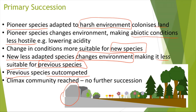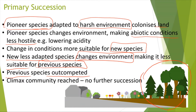This carries on until the final community is reached, which is the climax community, and there would be no further succession. To summarise: first, the pioneer species, which are adapted to the harsh environments, colonise the land which has very extreme conditions, and they change the environment — for example, by making the abiotic conditions less hostile. The change in conditions is more suited for the new less adapted species, and the less adapted species then change the environment, out-competing the previous species, and this carries on until the climax community is reached, where there will be no further succession.